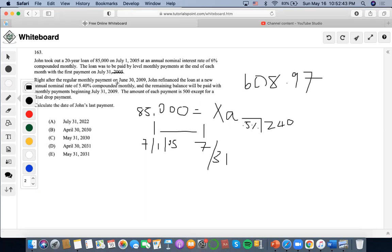Now, right after the regular monthly payment on June 30, 2009, so several years have passed, John refinanced the loan at a new annual nominal rate of 5.4% compounded monthly, and the remaining balance will be paid with monthly payments beginning this date. The amount of each payment is $500, except for a final drop payment. We want to calculate the date of John's last payment. So this is a drop payment type problem.